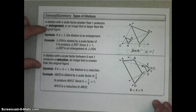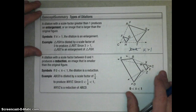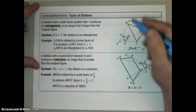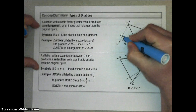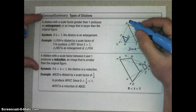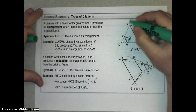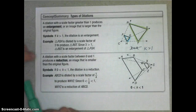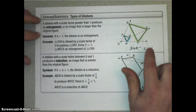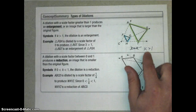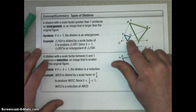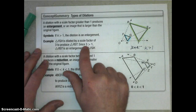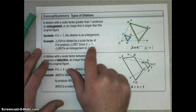In a dilation, it can be either an enlargement or a reduction. In this example, the original figure is FGH, and we make a dilation creating RST, which is bigger than the original — so it's an enlargement. The scale factor is greater than 1. In this example, the pre-image gives us an image that is 3 times the original, so it's a scale factor of 3. Since that is greater than 1, we say it's an enlargement.